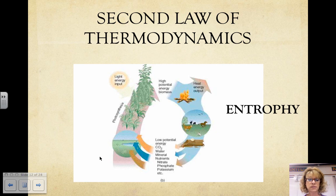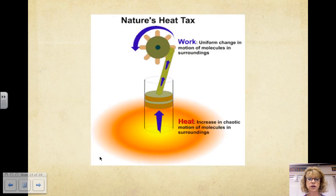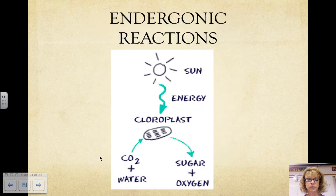For example, an ecosystem takes in light and releases heat to its surroundings. Whenever chemical reactions occur in cells, energy is transferred and some energy escapes the cell as heat. Cells are not 100% efficient when transferring or transforming energy. Chemical reactions, including those that occur in cells, are either endergonic or exergonic.